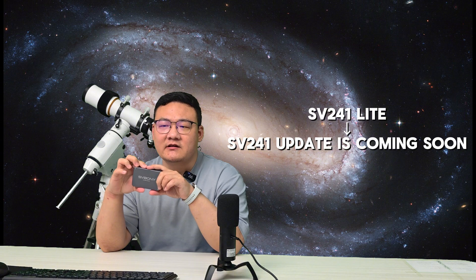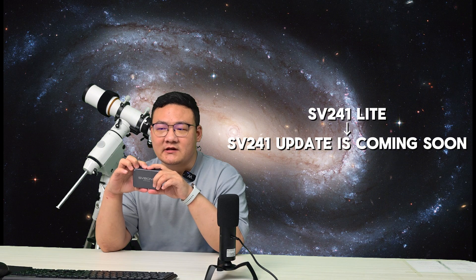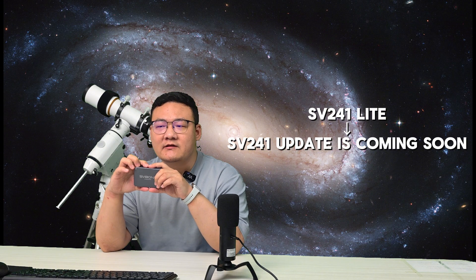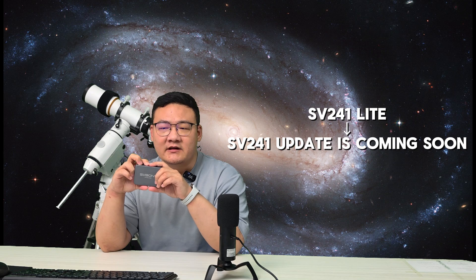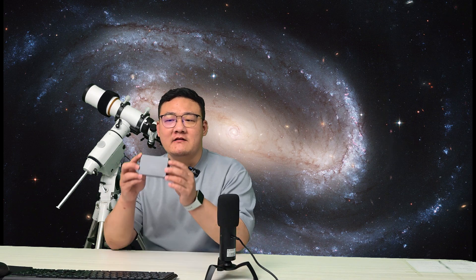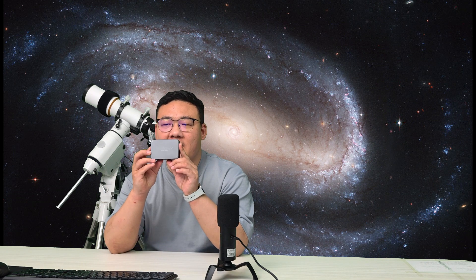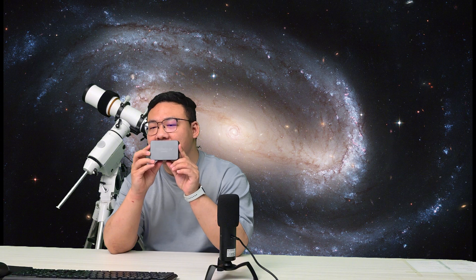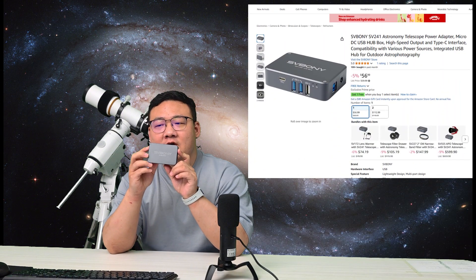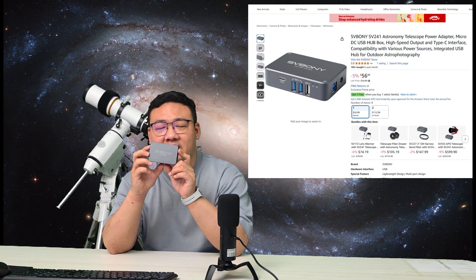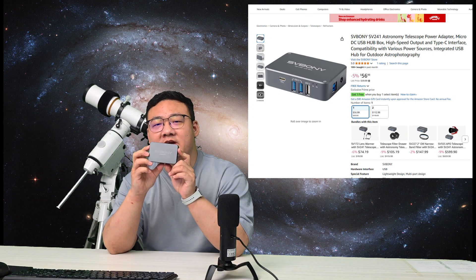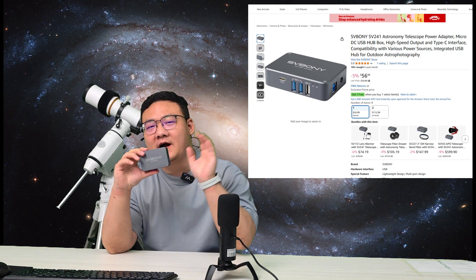If you have any expectations or suggestions for the enhanced SV241, please feel free to let us know in the comments. If you want this power hub to enhance your astrophotography experience, the current price on Amazon is only $59. Feel free to click the link in the description to make a purchase. Thank you. Bye.